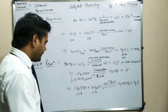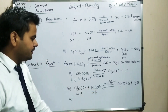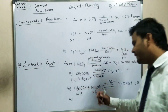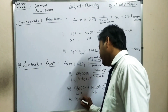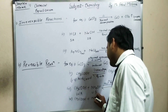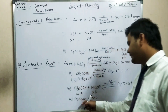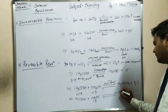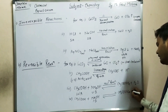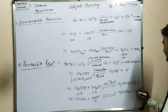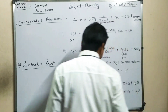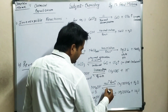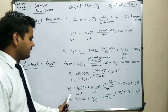One important thing: when a weak acid reacts with a strong base, the reaction is also reversible. For example, CH3COOH (weak acid, acetic acid) reacts with NaOH (strong base) to form CH3COONa (sodium acetate) plus water. This neutralization reaction is also reversible.